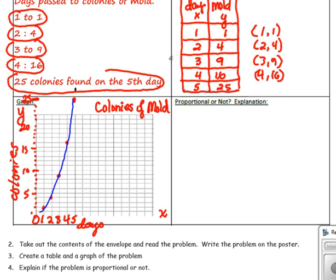And it looks like it might pass through the origin. I'm not sure. But remember, it has to be a straight line. Is it a straight line? No. Since it is not a straight line, this data is not proportional.